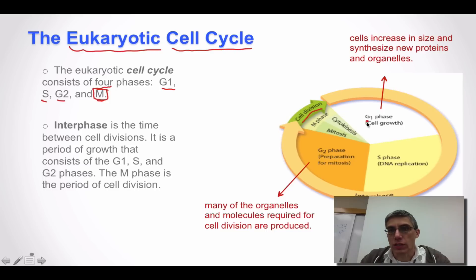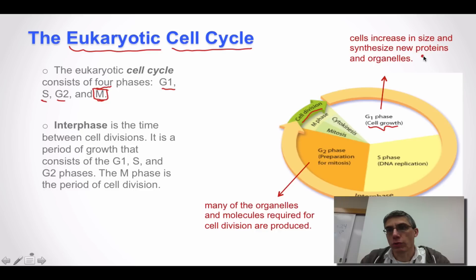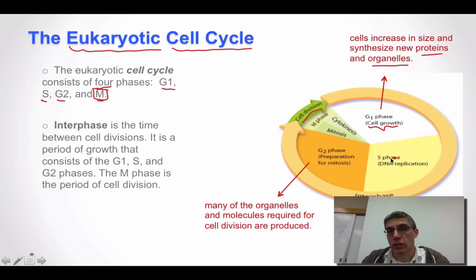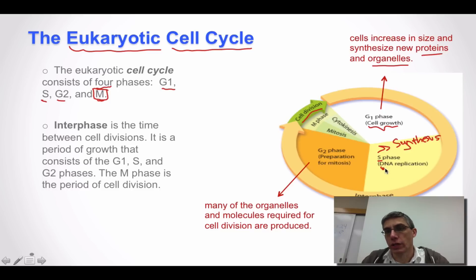The G1 phase is going to be the phase of the cell cycle where most of the growth of the cell is going to occur. In addition to growth, we're going to be producing more proteins and more organelles. If this particular cell has decided to divide, it's going to enter into the S phase. S stands for synthesis, and synthesis is going to involve DNA replication. That DNA has to be replicated before the cell can actually divide into two new daughter cells.